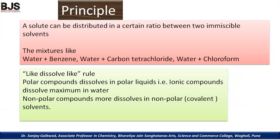Now, with respect to the principle of this technique: a solute can be distributed in a certain ratio between two immiscible solvents. In this technique, we have to take two immiscible solvents — one of them may be aqueous and another is an organic solvent. Whatever component dissolves in the aqueous solution, we add the organic solvent and one of the components gets extracted into the organic solvent and can be removed easily.